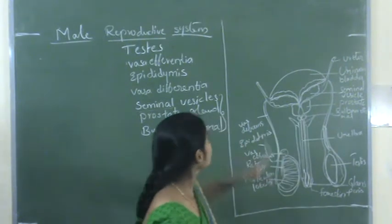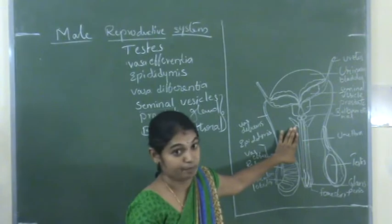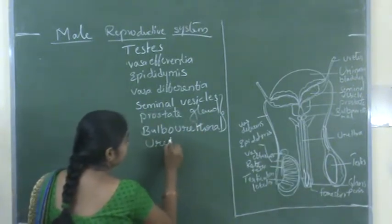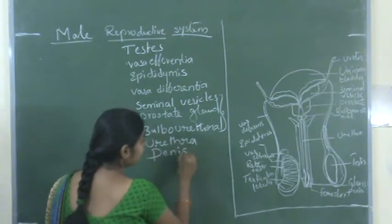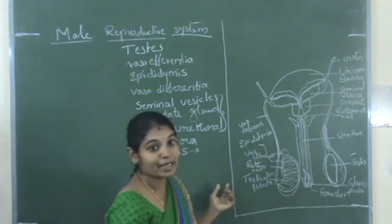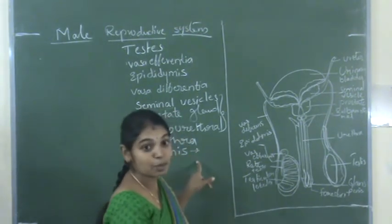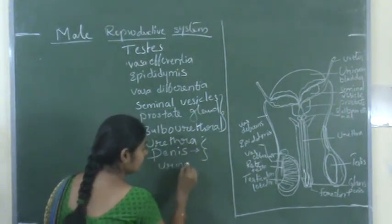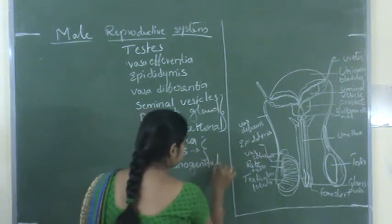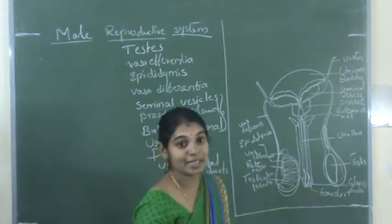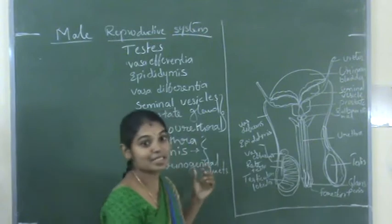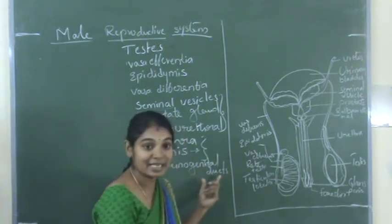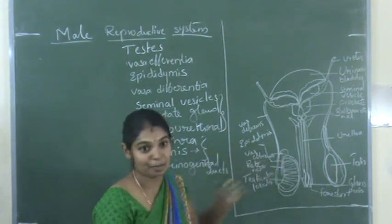The vas deferentia leads into the urethra, and this urethra passes through the penis. The penis is the external genitalia of the male reproductive system. Both the urethra and penis serve as urino-genital ducts, because through them urine is passed out as well as semen. That is why these two ducts are known as urino-genital ducts — they serve both the urinary system and the reproductive system.